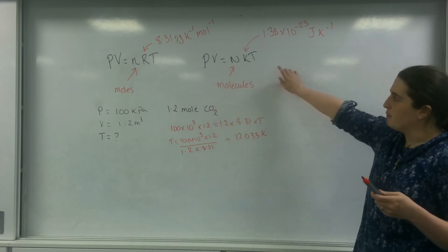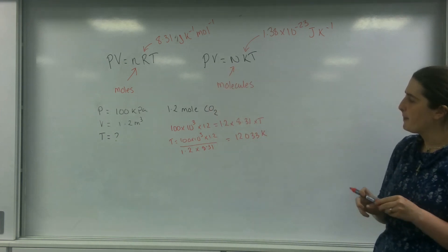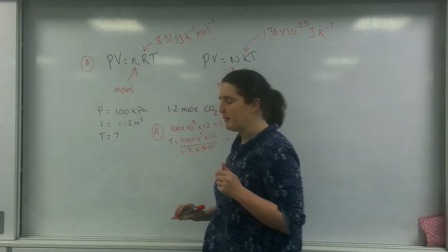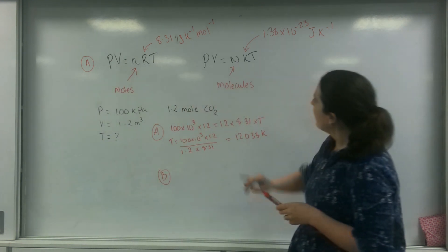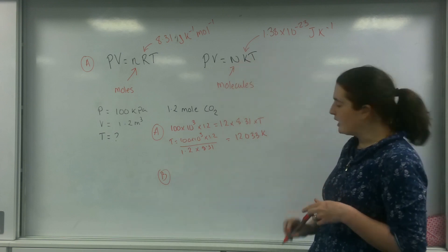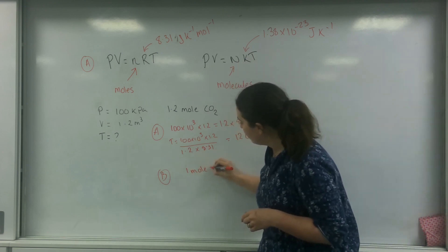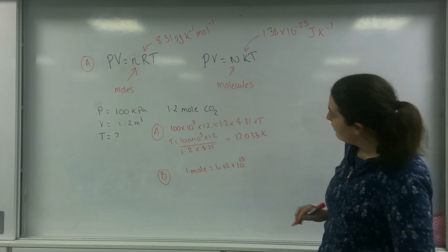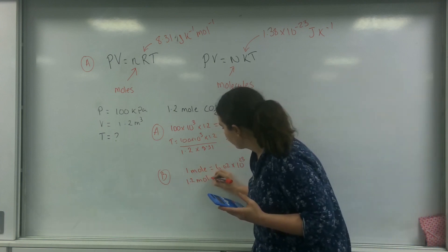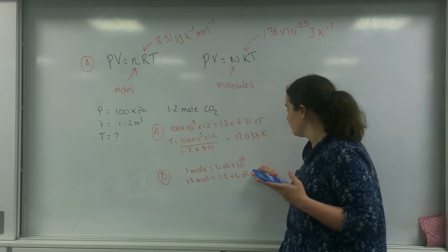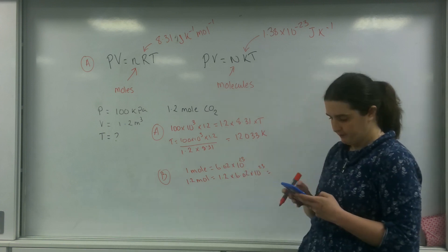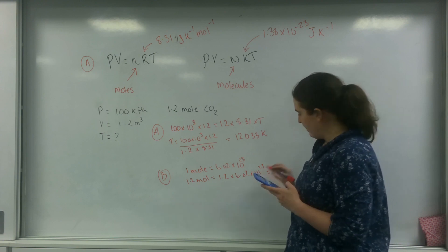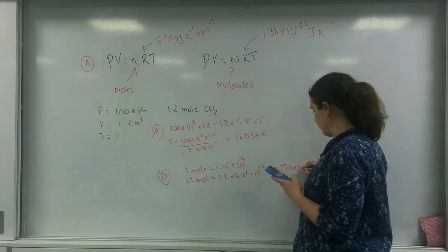Now what I'm going to do, so this is using the first one. I'm going to use the exactly same information, but I'm going to use this one here. I'm going to call this A. So this is with A. Let's try it with B. Now the problem with B is that I need to know how many molecules I have got. And I know that 1 mole equals 6.02 times 10 to the 23 atoms or molecules. Therefore, I know that 1.2 mole is 1.2 times 6.02 times 10 to the 23. So that's 7.224 times 10 to the 23.